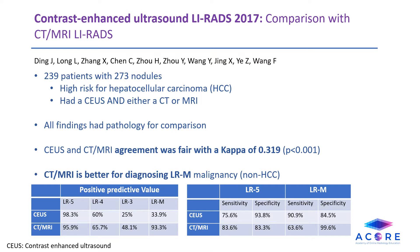This next article looks at contrast-enhanced ultrasound and how it fared against CT or MRI in LI-RADS observations, LR-3 and above, or LR-M. They had 273 nodules in 239 patients with pathology available for all lesions. The intermodality agreement between contrast-enhanced ultrasound and cross-sectional imaging was fair with a kappa of 0.319 and a significant p-value of less than 0.001. The positive predictive value is comparable for LR-5 and LR-4 lesions between modalities. However, CT or MRI is better for diagnosing LR-M malignancy, which is non-HCC malignancy, than contrast-enhanced ultrasound.